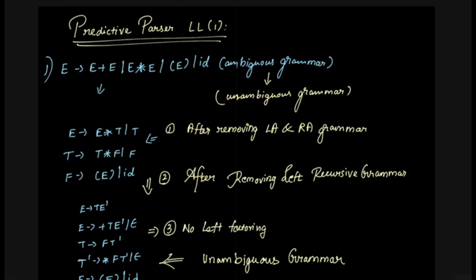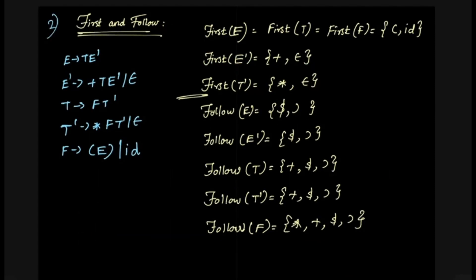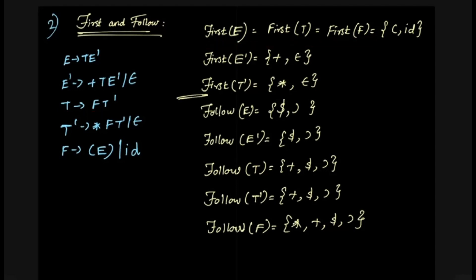Now I'll tell you about the FIRST and FOLLOW sets. You can see FIRST and FOLLOW in detail in another video if you want. Now, if you want to find FIRST of E, you will see the first term on the right-hand side. So there is T. T will give FIRST of T. If you want FIRST of T, you will see FIRST of F. So if you want FIRST of F, you will see open bracket and id. So this is the answer.